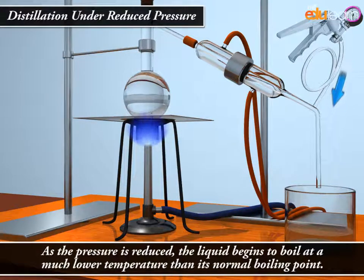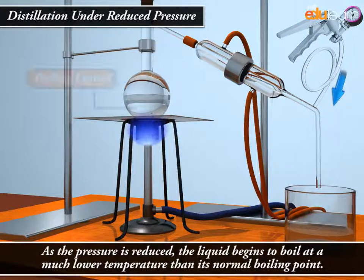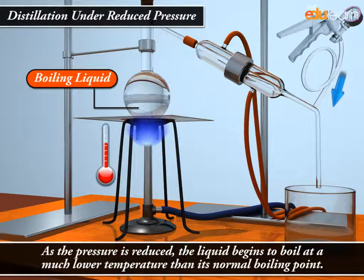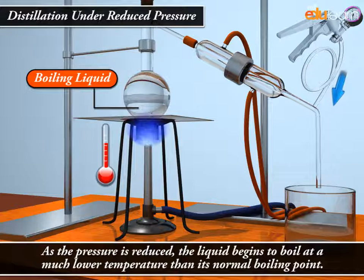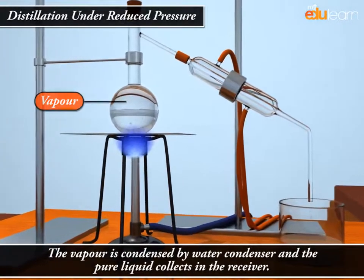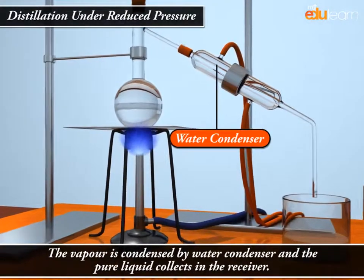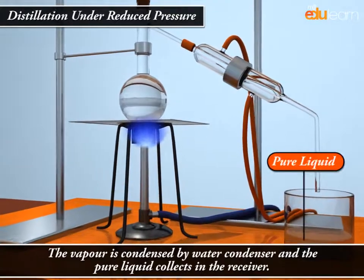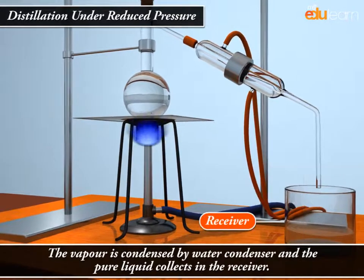As the pressure is reduced, the liquid begins to boil at a much lower temperature than its normal boiling point. The vapor is condensed by water condenser and the pure liquid collects in the receiver.